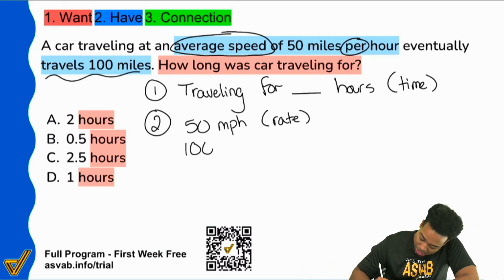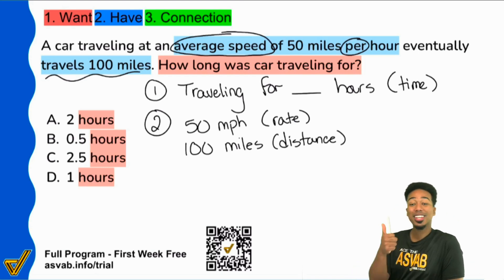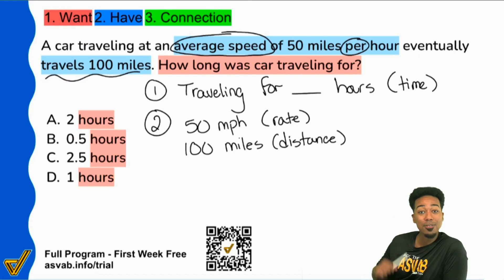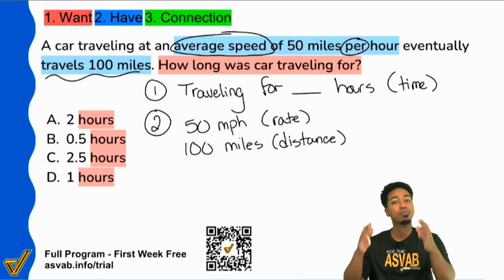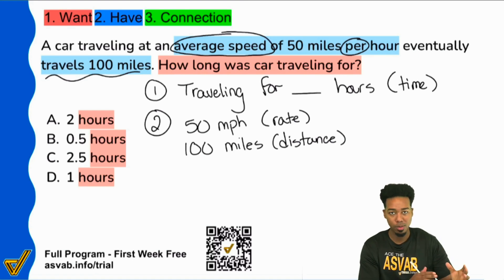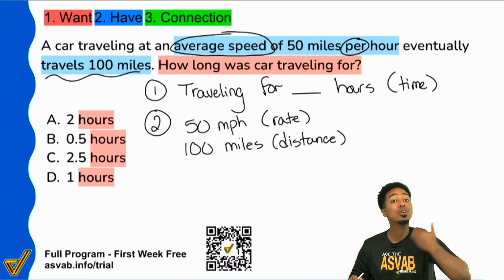And I hope you see now that what we have is a distance-rate-time problem. Notice we're looking for time, we have the rate, we have the distance. So now we just need to make sure we are plugging the numbers into the right place in the formula, and you'll be able to do this confidently to the point where you can talk about it.